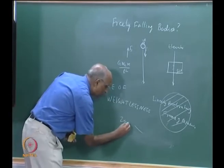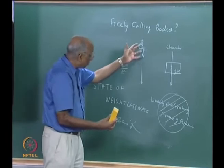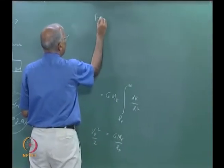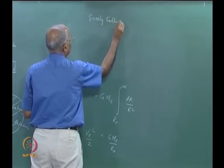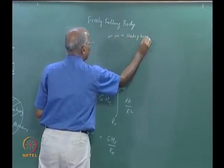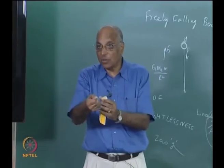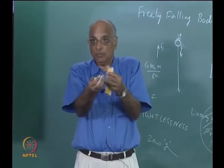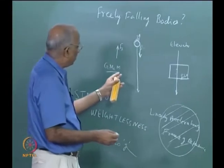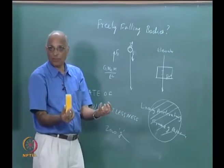Some people call it zero G. Actually it is not zero G - G is gravitation. Gravitation is always there, but a body in orbit which is also a freely falling body is always in a state of weightlessness. A freely falling body is in a state of weightlessness - it does not have any weight. And so also, in the lift itself, if I hold a teacup coming down, you will feel it is not heavy at all - as if it is zero G. That is why whenever you see pictures of astronauts in space, they are all floating around - there is nothing to really hold them.